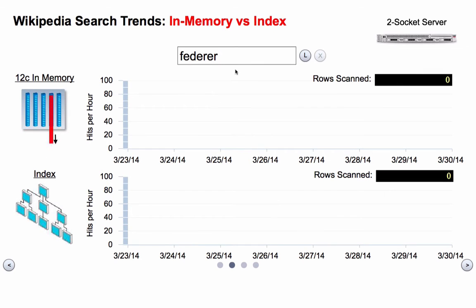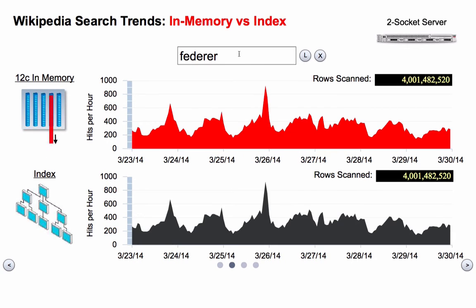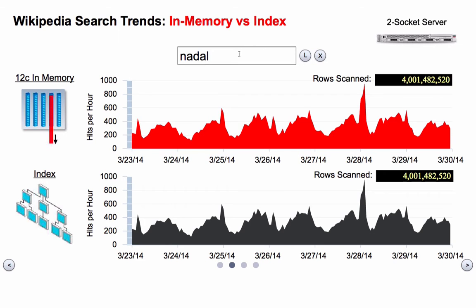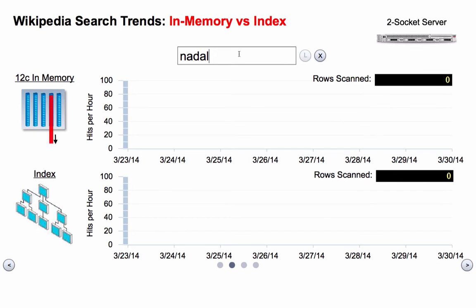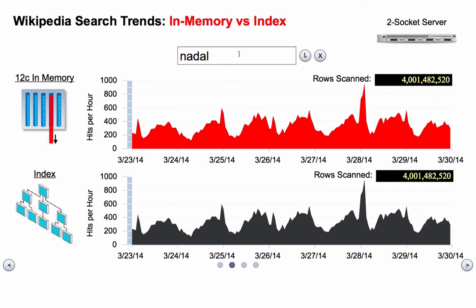Now let's compare this to what happens with our new in-memory column store. On top we have the exact same thing in red running against the 12C in-memory column store. On the bottom, we have the index we were just looking at. As I type all these search queries, we essentially get instantaneous results from both. The first real benefit of the in-memory column store is you don't have to pre-create these analytic indexes — you don't have to understand the data, understand the queries, and pre-create the analytic indexes. It runs really fast straight out of the box; all we did was enable the 12C in-memory column store and got instantaneous results on the exact same data.